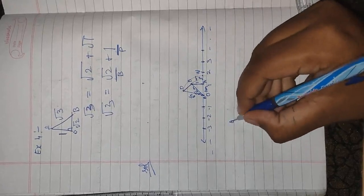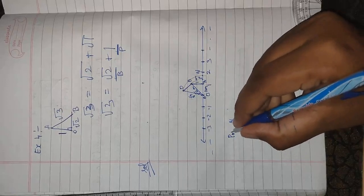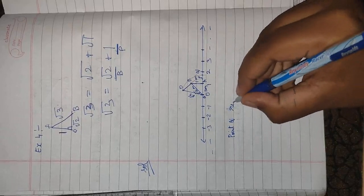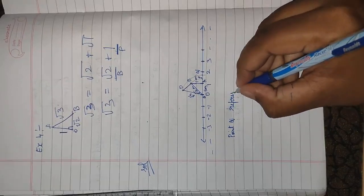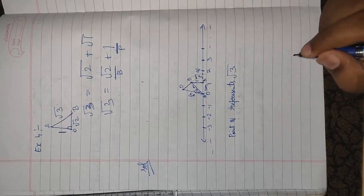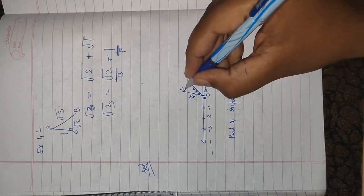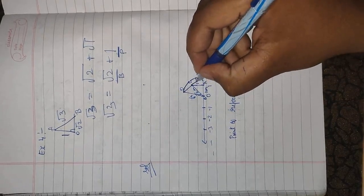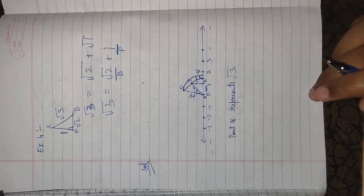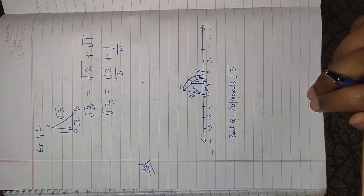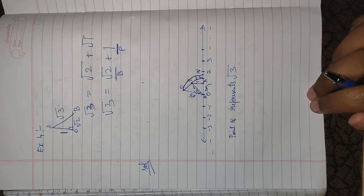So P represents √2 and Q represents √3 on the number line. That is how we represent these irrational numbers on the number line. All your example sums are now finished.